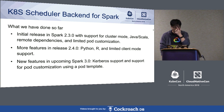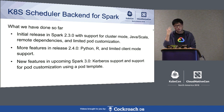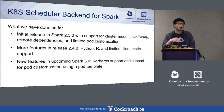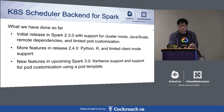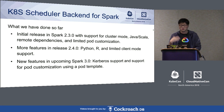We had the first release in Spark 2.3 with initial support for cluster mode with Java and Scala language bindings. We also support remote dependencies on HTTP servers, S3, HDFS, or Google Cloud Storage, and a limited set of pod customizations like environment variables, labels, and annotations. Just a month ago, Spark 2.4 was released with more features for the Kubernetes scheduler backend — you can now run Python or R Spark jobs on Kubernetes — and this release also comes with limited client mode support.